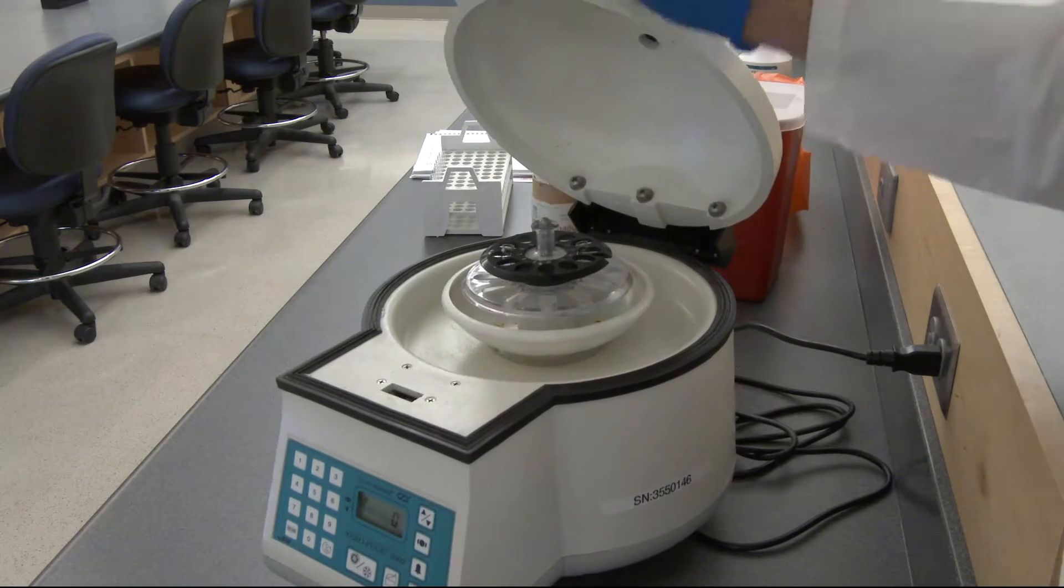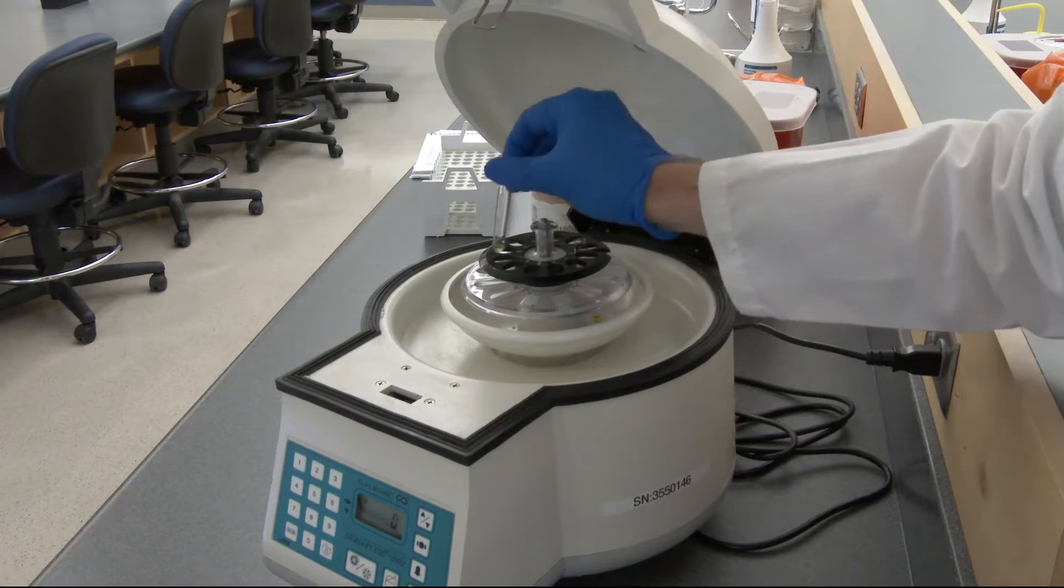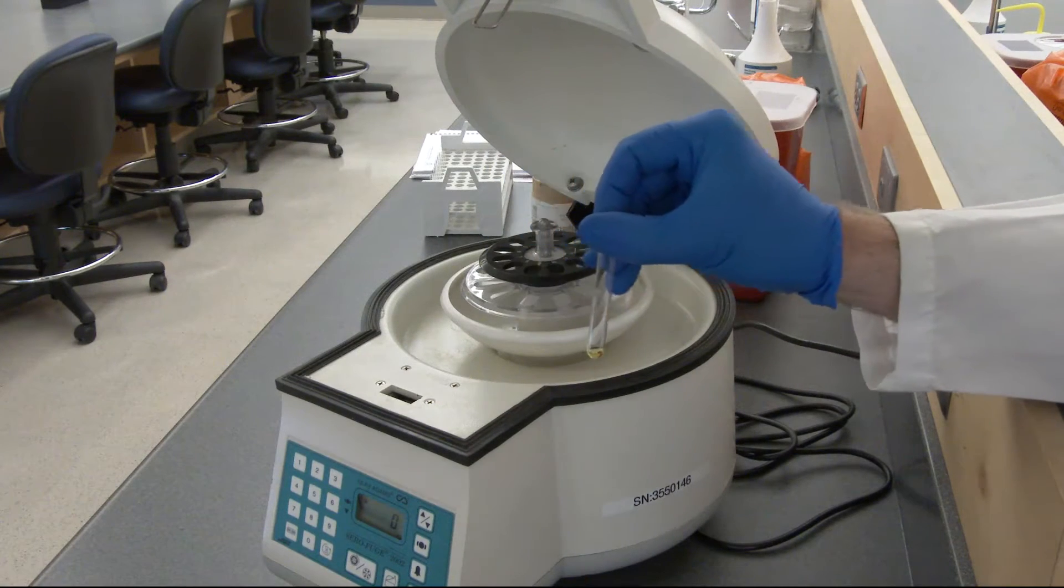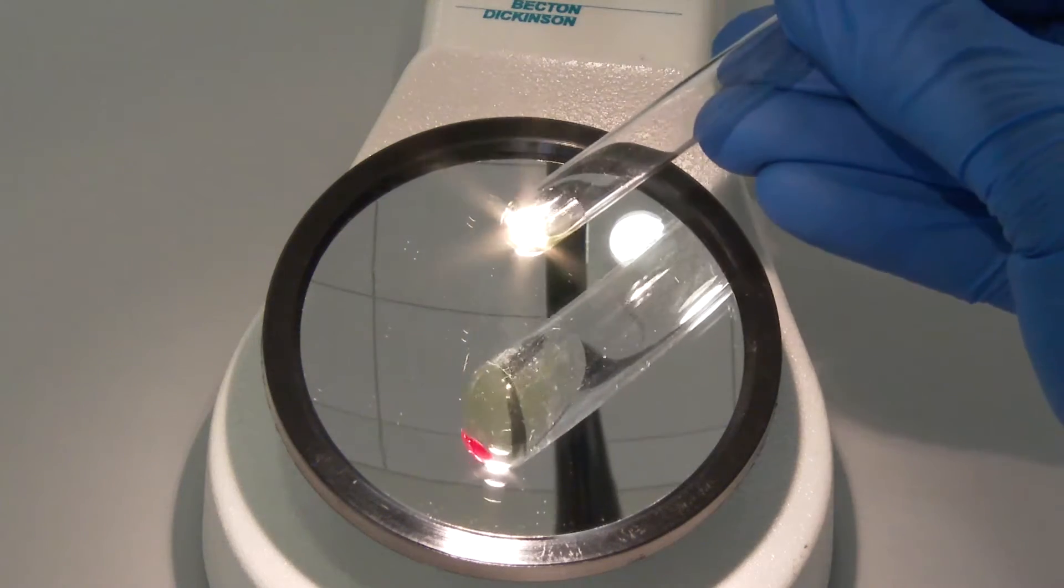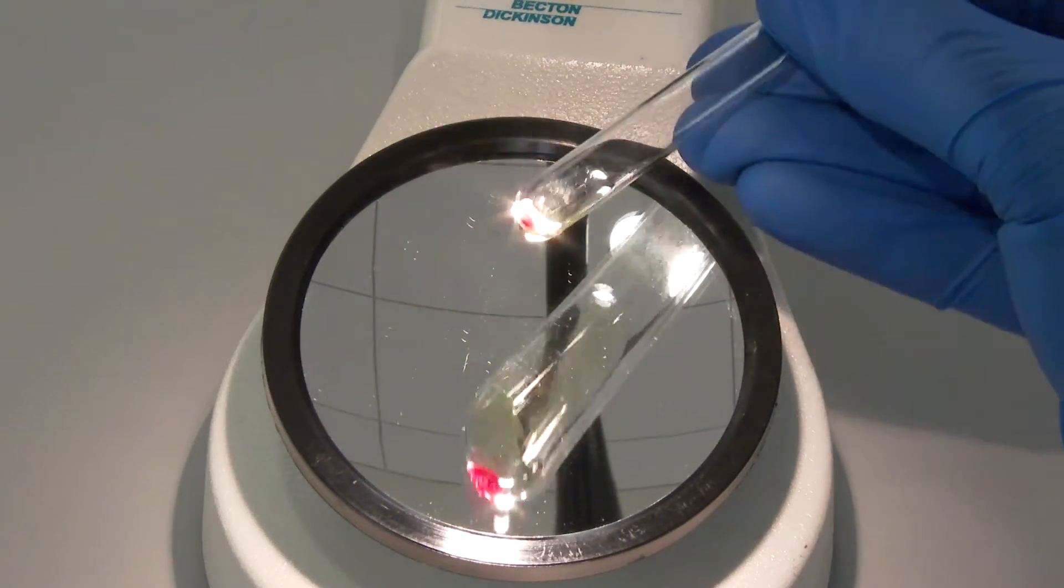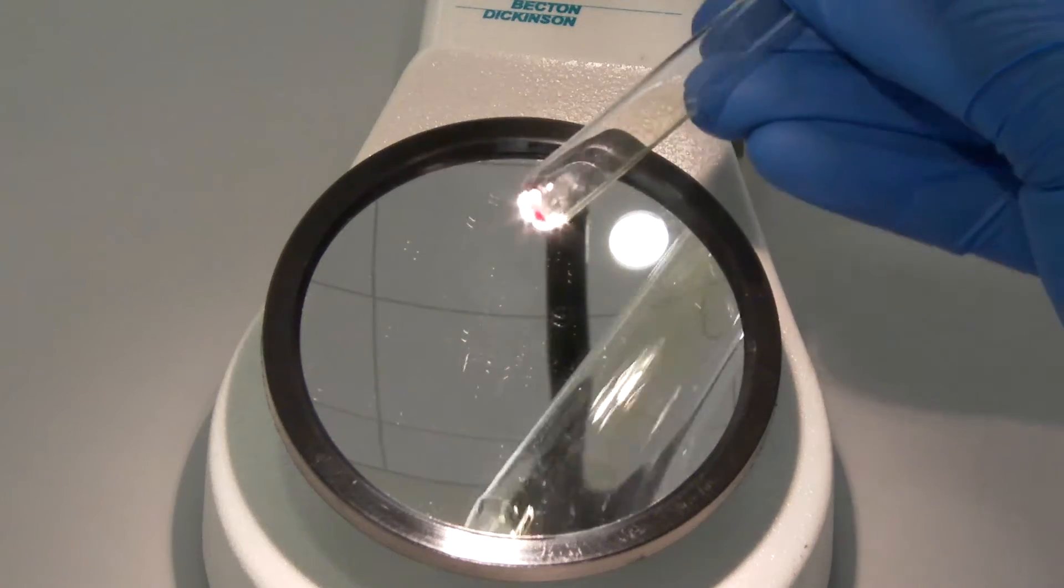When you pull the test tube from the centrifuge, hold the test tube with the open end between your thumb and index finger. Move the tube between the magnifying mirror and the light. Tilt the tube horizontally with the cell button facing up.